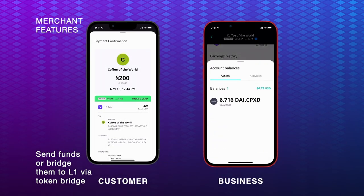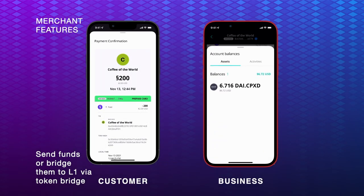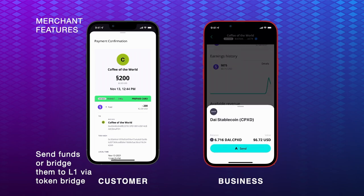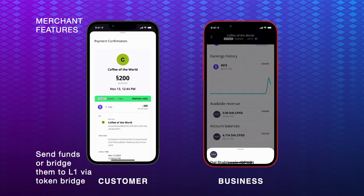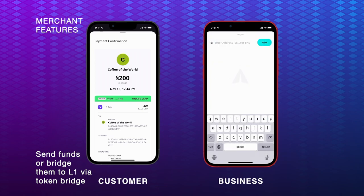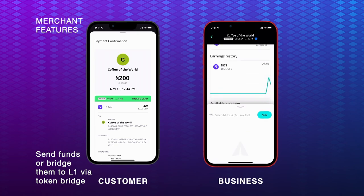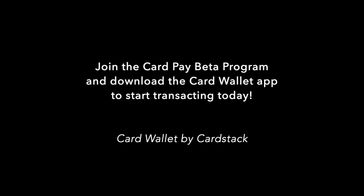By clicking on a balance, merchants can bridge their funds back to Layer 1, use them to issue a prepaid card, or send them to another address. In the future, they will also be able to distribute rewards and earn rewards themselves.